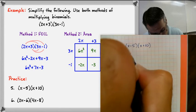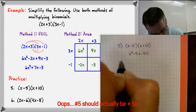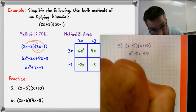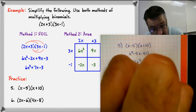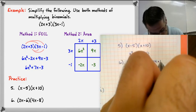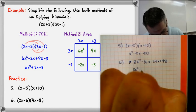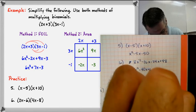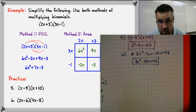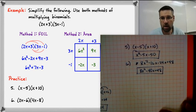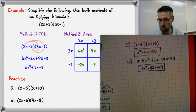Here are two final practice problems. Go ahead and hit pause, then push play when you're done to check your answers. The answer for number 5 should be x squared minus 5x minus 50. For number 6, you should get 8x squared minus 40x plus 48 — with an intermediate step of 8x squared minus 16x minus 24x plus 48. If you have any questions or don't understand, please reach out. I hope you understand multiplying binomials, and I'll talk to you later.